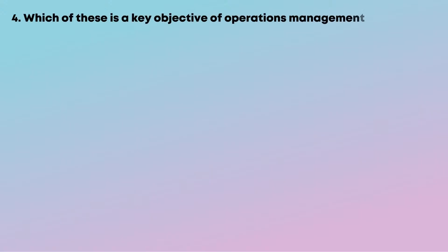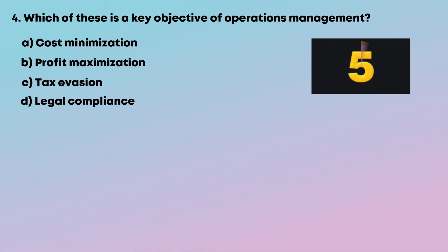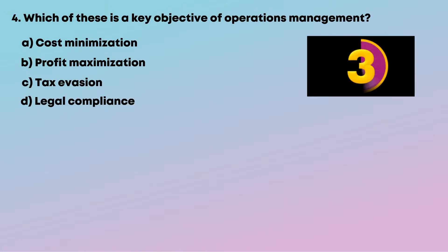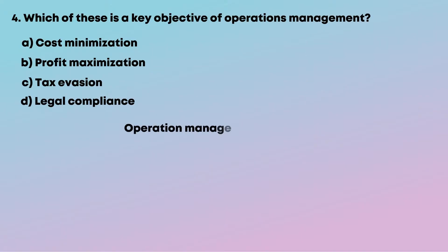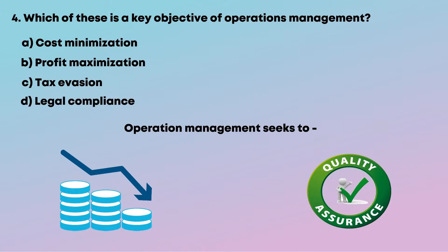Question 4: Which of these is a key objective of operations management? Options are: A, cost minimization; B, profit maximization; C, tax evasion; D, legal compliance. Operations management seeks to reduce operational costs while maintaining quality. So the answer is A, cost minimization.